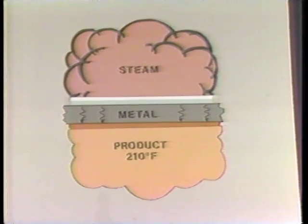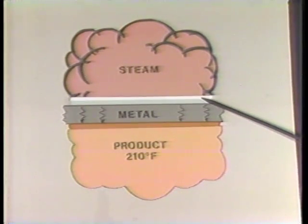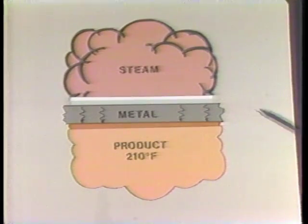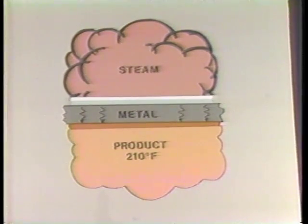If it were possible to reduce the thickness of the condensate and air on the inside of the surface by one-half, the steam pressure could be lowered from 15 to 10 pounds gauge, or 240 degrees Fahrenheit.